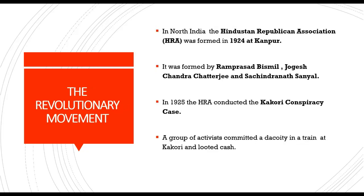The Hindustan Republican Association, or the HRA, was formed in 1924 at Kanpur. It was formed by Ram Prasad Bismil, Jogesh Chandra Chatterjee, and Sachindranath Sanyal. The objectives of the HRA were: the establishment of a federal republic of United States of India, to conduct political crimes and dacoities to raise money and arms for the movement.